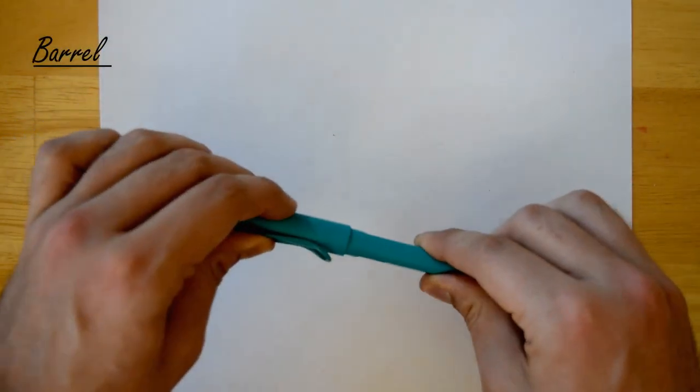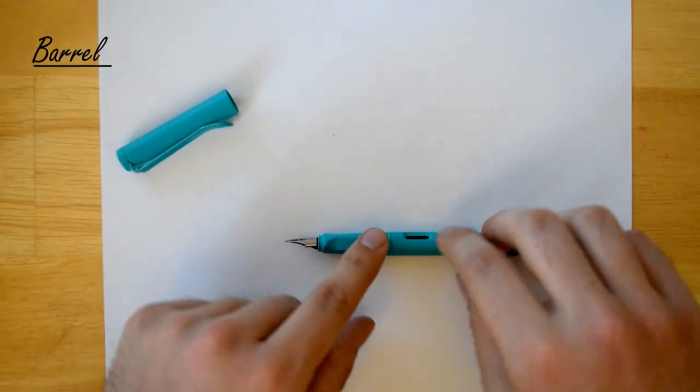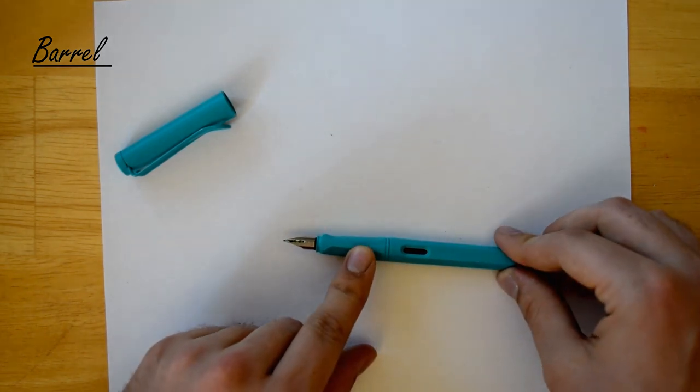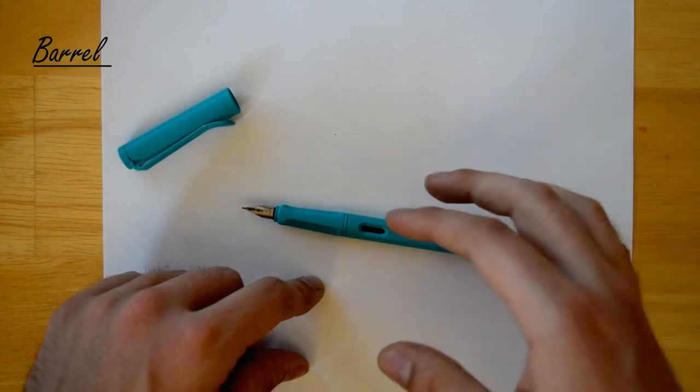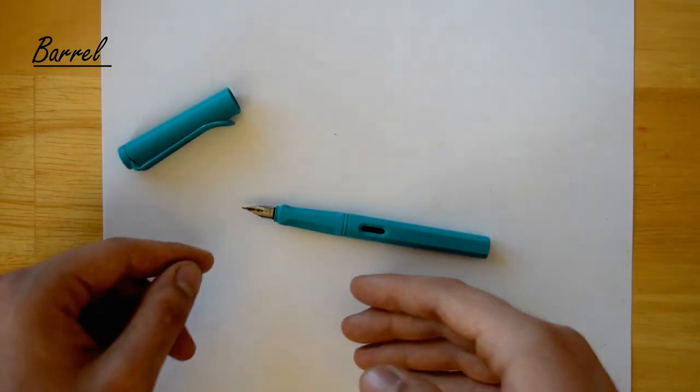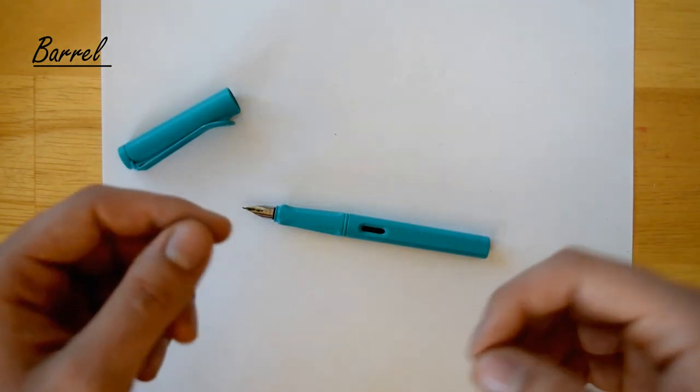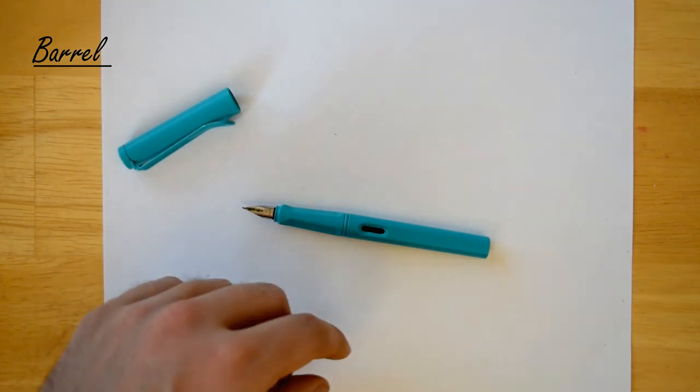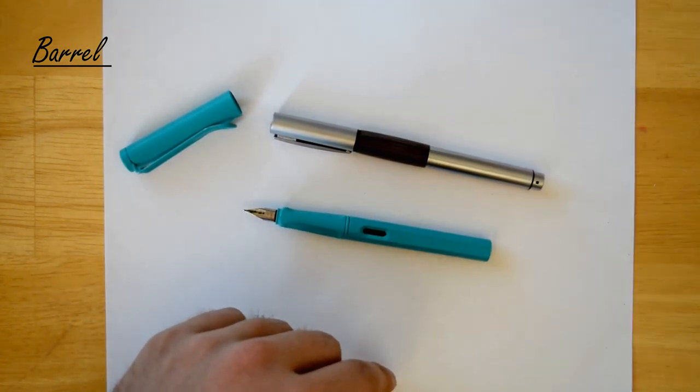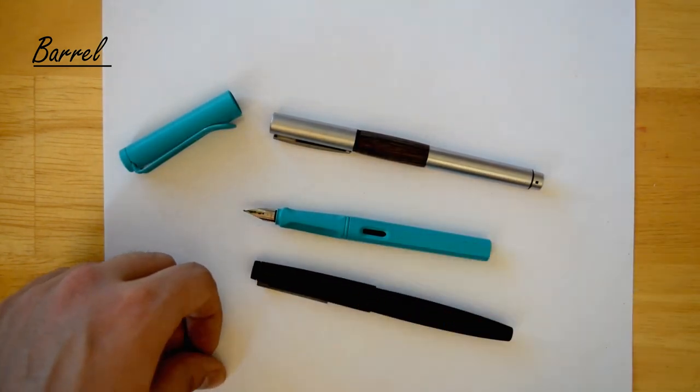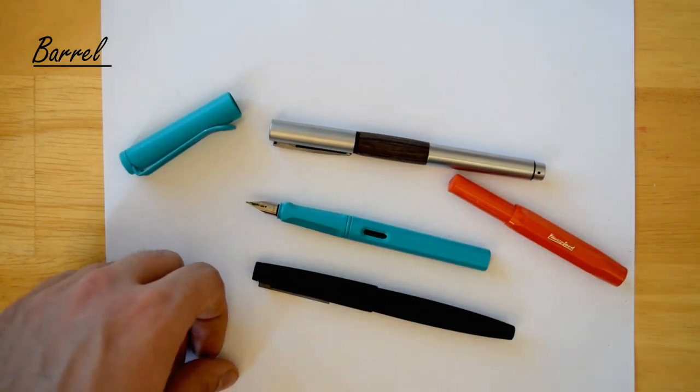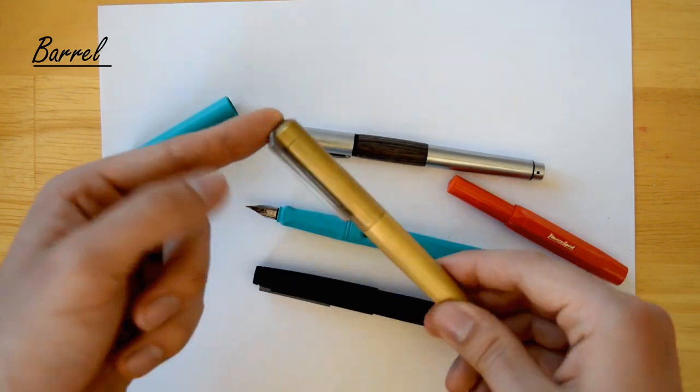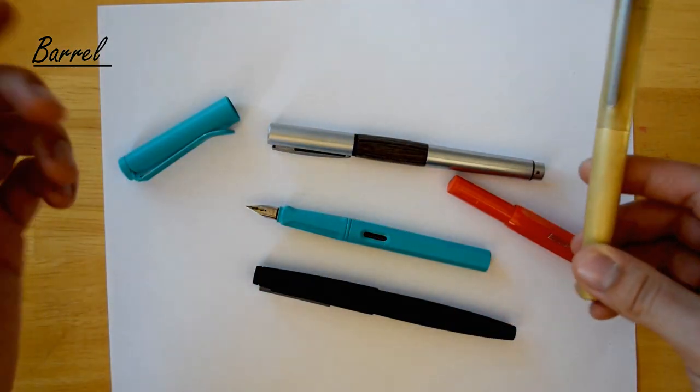Next up we have the barrel of the pen. The barrel, also known as the body of the pen, is the main part just after the grip section. On this Lamy Safari, the barrel is made out of ABS plastic, but like the grip, it can be made out of several things such as aluminum or macrolon or just any kind of plastic, even some metals like brass or silver.